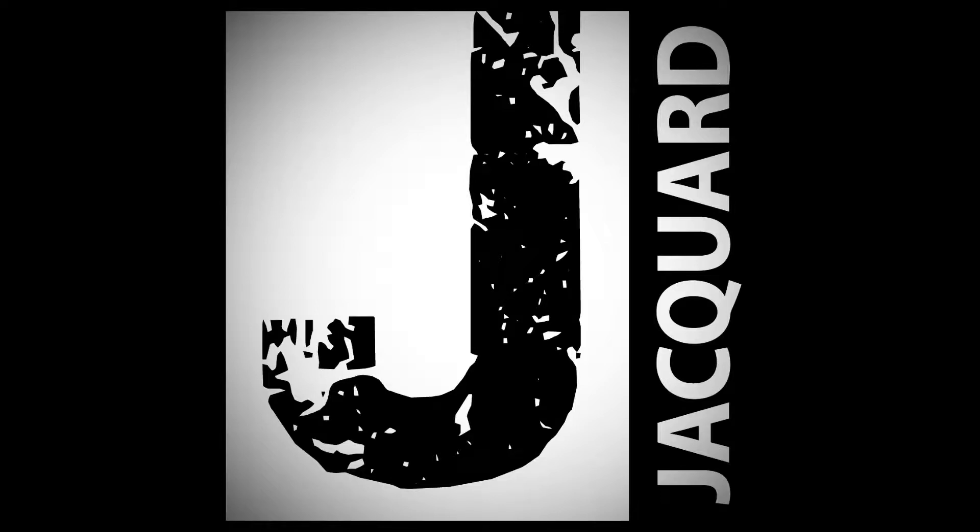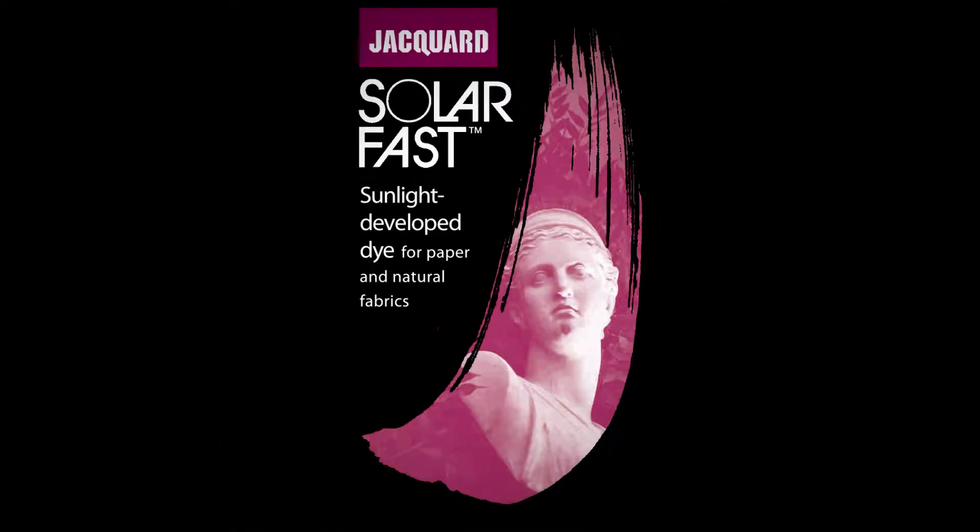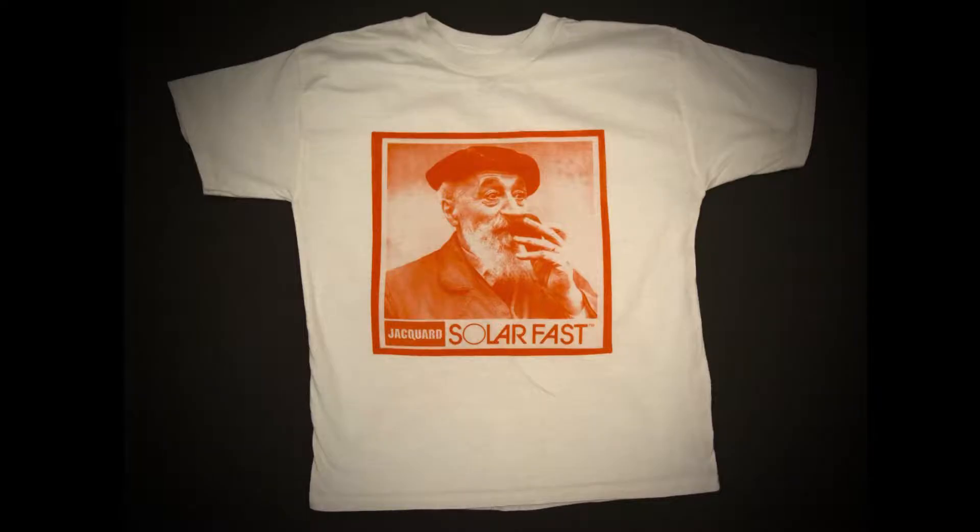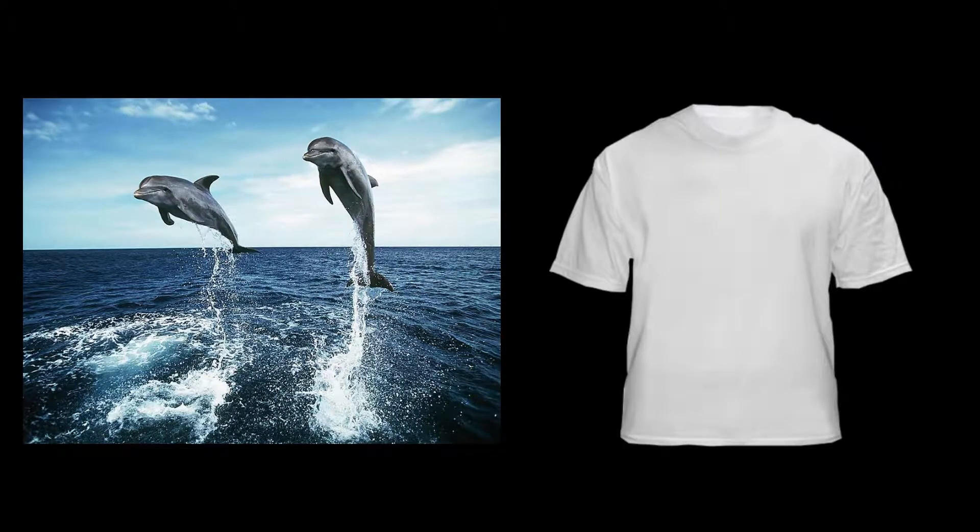This is an instructional video for Solar Fast Sunlight Developed Dye for paper and natural fabrics. There are a ton of ways to use this product. First, let's print a photograph onto a t-shirt.